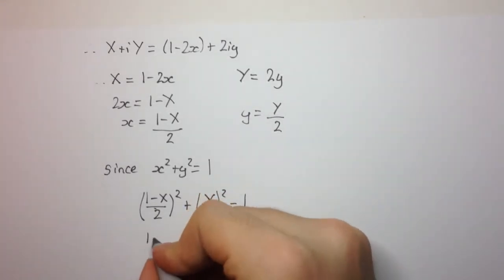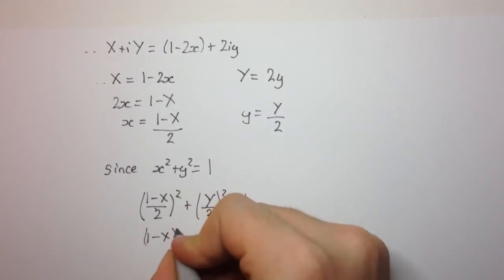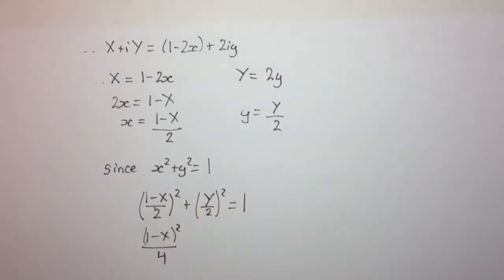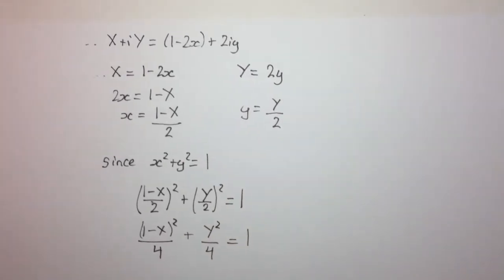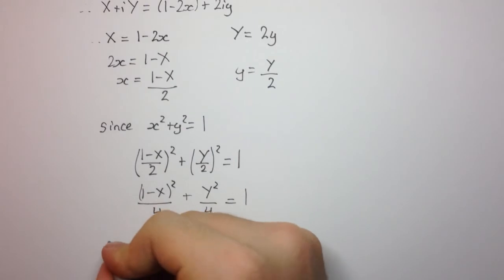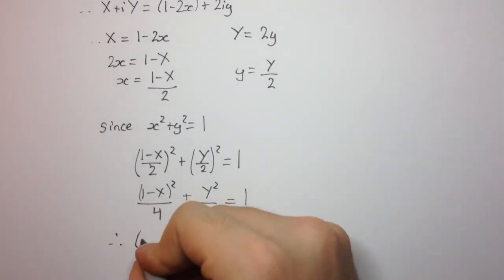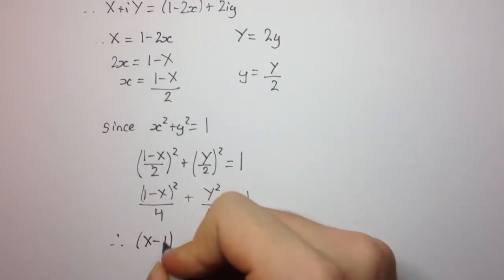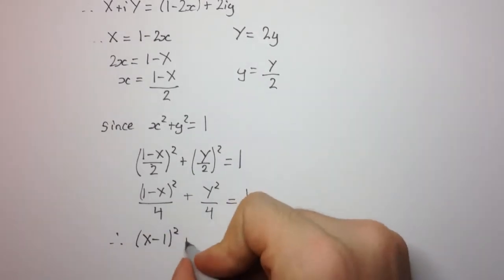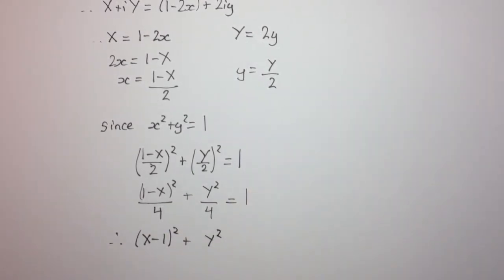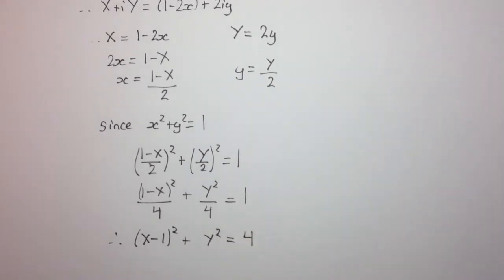Now, we can simplify a little bit. 1 minus capital X squared over 4 plus capital Y squared over 4 equals 1. And so, therefore, we have capital X minus 1 squared plus capital Y squared. And multiplying up by 4 will give us 4.